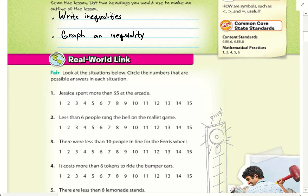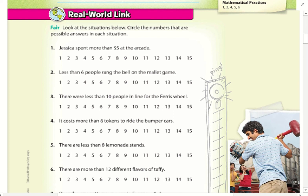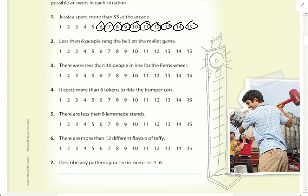The real-world link says: look at the situations below and circle the numbers that are possible answers in each situation. Jessica spent more than $5 at the arcade, so these numbers indicate she spent more than $5 — it could be any of these answers. Number two: less than six people rang the bell on the mallet game, so these are the numbers that are less than six.